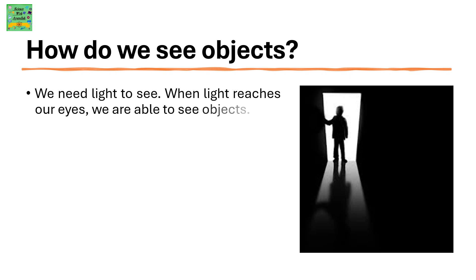How do we see objects? Have you ever thought about how we see objects? We need light to see the objects. When light reaches our eyes, we are able to see objects.